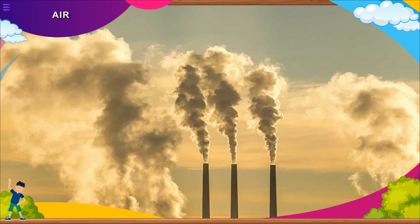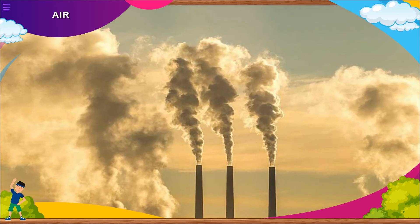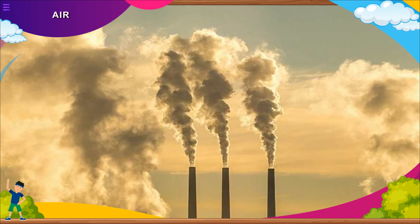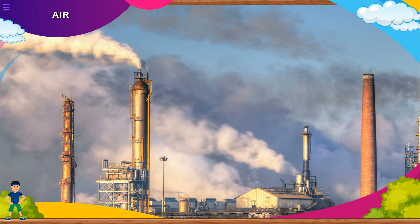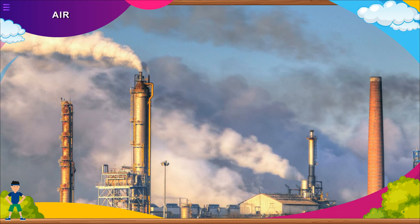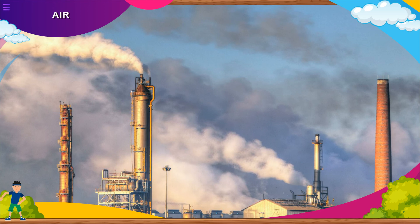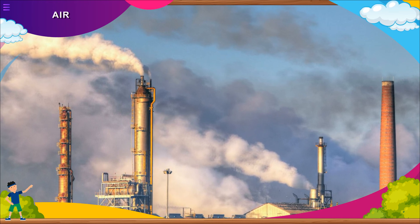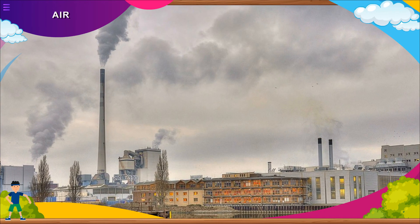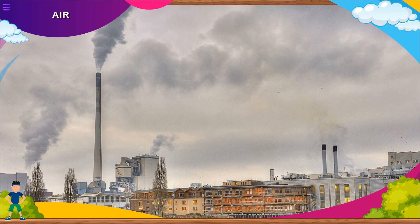Air pollution: The addition of harmful substances to the air results in air pollution. Most air pollution comes from burning fuels such as natural gas, coal, petrol and kerosene. Industrial processes and vehicles throw out smoke which contains many harmful gases. Air pollution causes breathing problems, harms plants and animals, and causes a rise in temperature which leads to global warming.